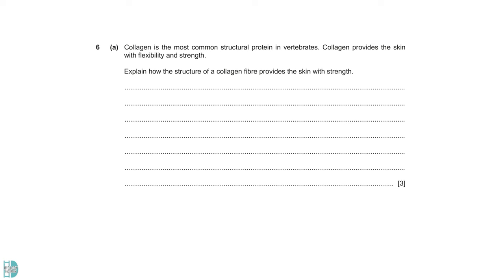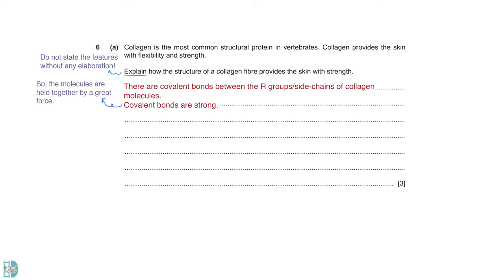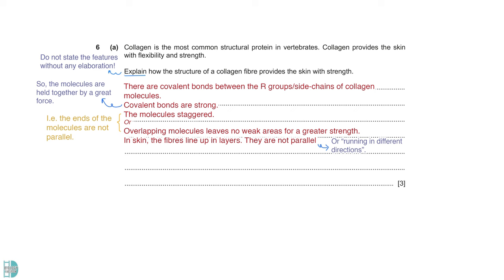Question 6 is about collagen. Explain how the structure of a collagen fiber provides the skin with strength. The command word here is explain. So, you can't just state the features without any elaboration. There are many covalent bonds between the R groups or side chains of collagen molecules. Covalent bonds are very strong. This makes the molecules to be held together with great force. The molecules stagger. Overlapping molecules ensure no weak areas are found. In the skin, these fibers line up in layers. They are not arranged parallelly, but run in different directions. This provides tensile strength in different directions.